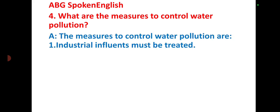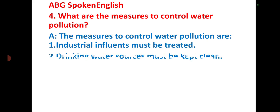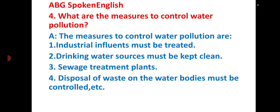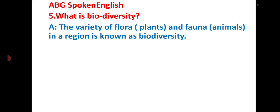The measures to control water pollution are: industrial effluents must be treated, drinking water sources must be kept clean, sewage treatment plants must be established, disposal of waste into water bodies must be controlled, and so on. The fifth question: What is biodiversity? The variety of flora and fauna is known as biodiversity.